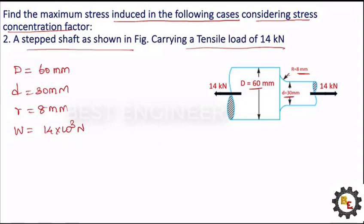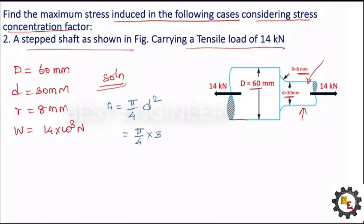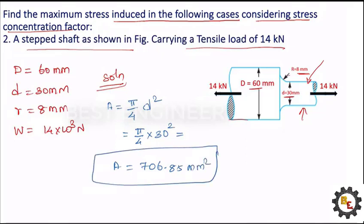There is a stepped shaft, so the load is carried maximally by the small shaft because the cross-sectional area is small. We need to concentrate on this small area. Area equals pi/4 into D squared — because it is a circular shaft — so pi/4 into 30 squared. We find area equals 706.85 millimeters squared.